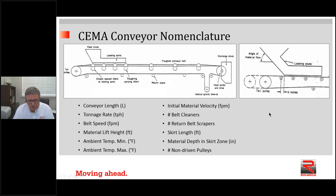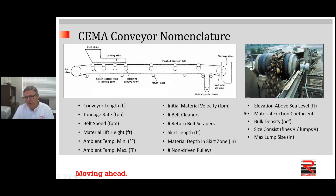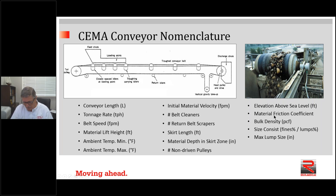We need to define the number of non-driven pulleys. In the case of a conveyor with a counterweighted take-up, we would have four non-driven pulleys: two snubs, one in a vertical gravity take-up position, and one at the tail. With a mechanical type take-up, you would have one non-driven pulley. Other important parameters include elevation above sea level — it's more difficult to cool a motor at 5,000 feet than at sea level. We also need to specify the frictional coefficient of the material, bulk density in pounds per cubic foot, size consist, and maximum lump size in inches.